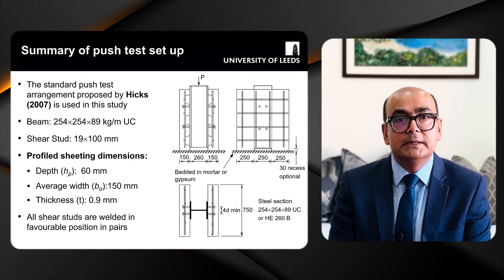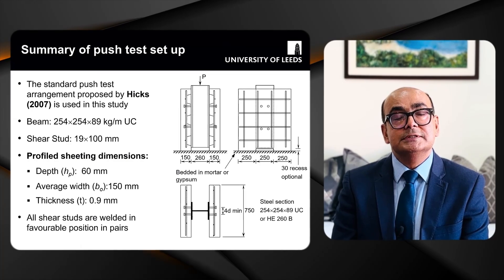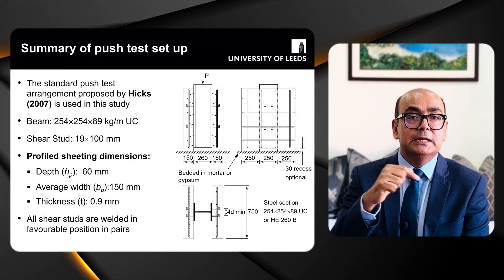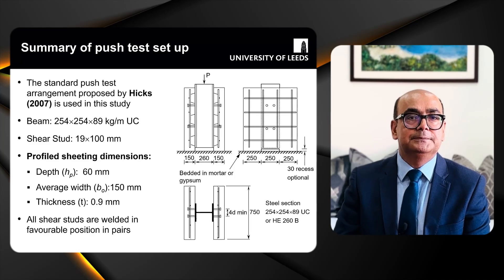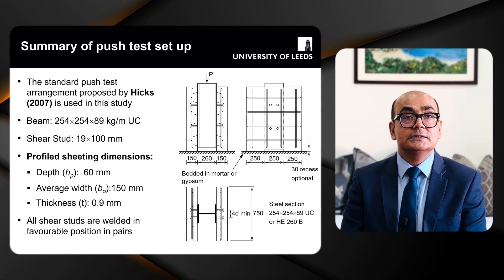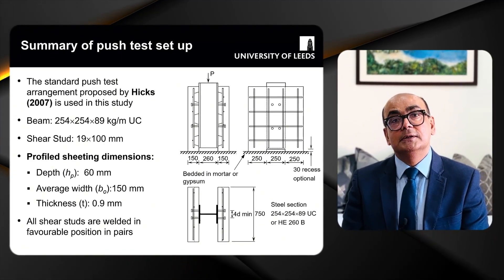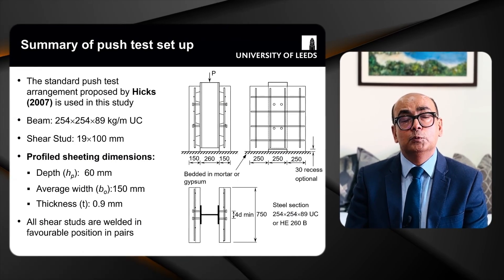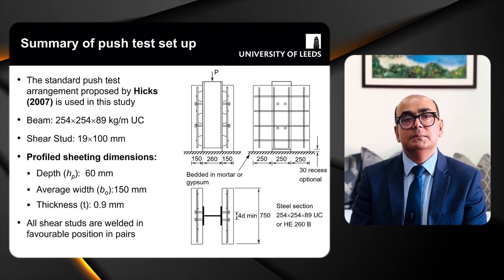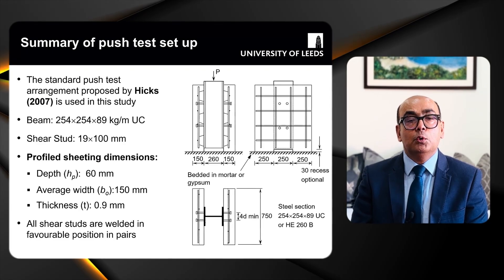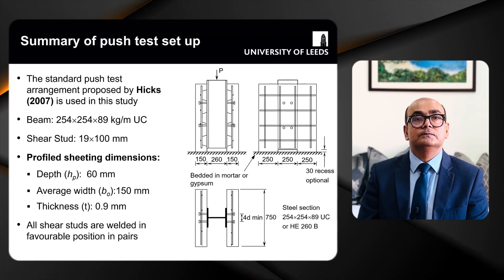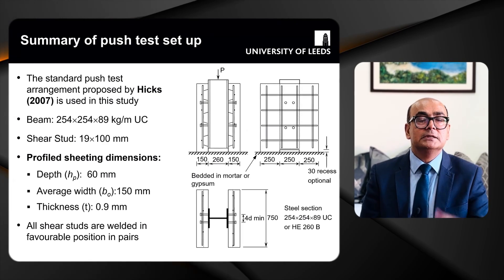This is a summary of the push test setup taken from Hicks 2007 — I will put a link for both the presentation and the paper in the description. The beam is 254×254×89 UKC and the shear stud is the standard 19×100 mm. Profile sheeting dimensions: depth 60 mm, width 150 mm, thickness 0.9 mm. All shear studs were welded in the favorable position in pairs.